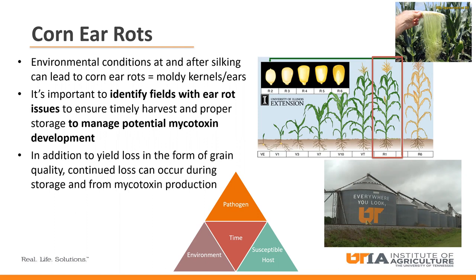Each one of these pieces in this triangle or pyramid have to be present for a disease like corn ear rots to occur. Here at the top in orange, we have the pathogen — this is what causes the disease, which in this case is the fungi. This can be inoculum that might be present in the field. Then we have a susceptible host, which is the crop the pathogen can infect. Many ear rots or the pathogens that cause them occur around the same time, highlighted in red, which is the R1 or at or after silking stage. However, ear rot pathogens have different environmental conditions that may be present at or around R1 in order to cause infection.